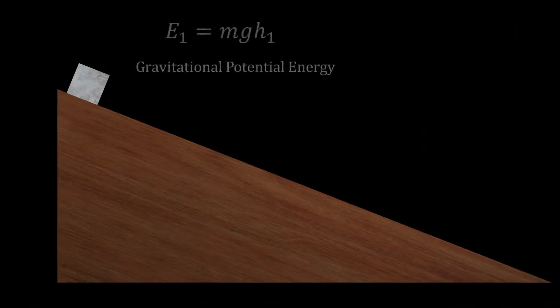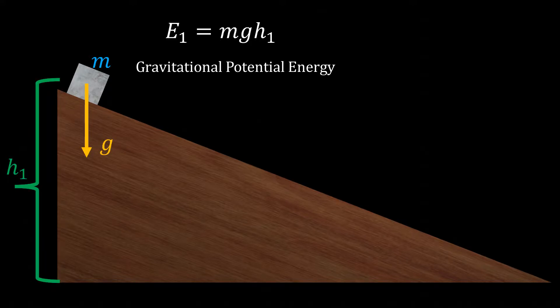Initially, the object only has gravitational potential energy, which is equal to the mass of the object, times the acceleration due to gravity, g, times the initial height, h1.